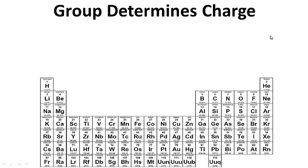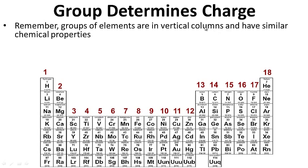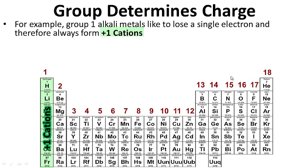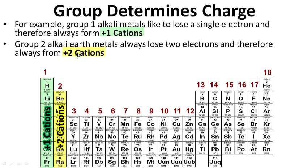So, group determines charge. Remember, groups of elements are in vertical columns and have similar chemical properties. There are 18 of them. One of the reasons groups have similar chemical properties is that the elements within the group form the same type of ion, which makes them behave in a similar fashion. For example, group 1 alkali metals like to lose a single electron and therefore always form plus-1 cations. Group 2 alkali metals always lose 2 electrons and therefore always form plus-2 cations.